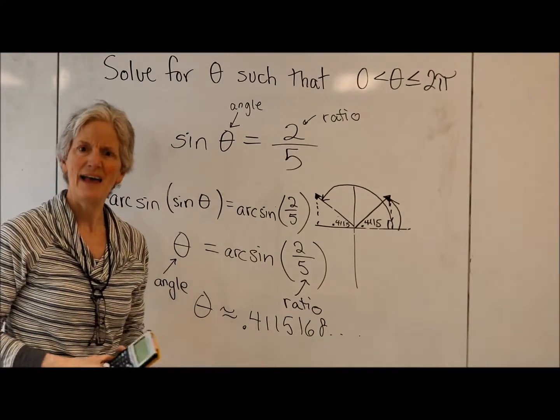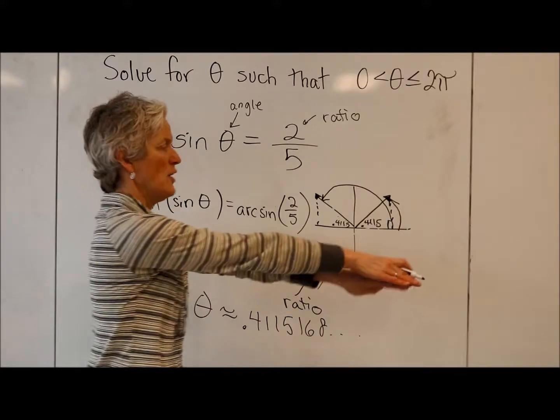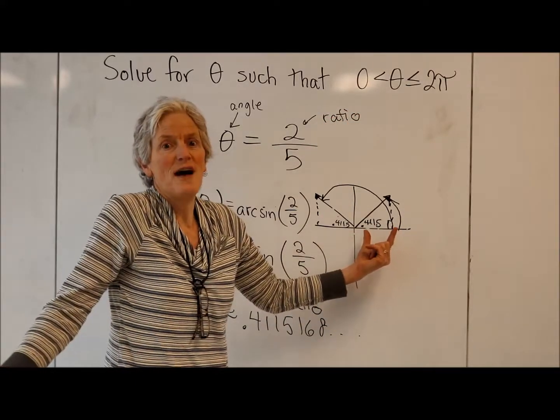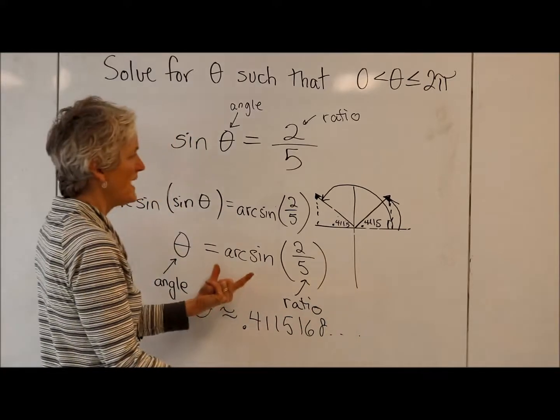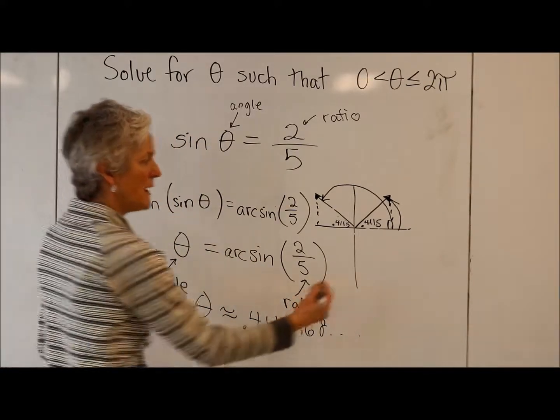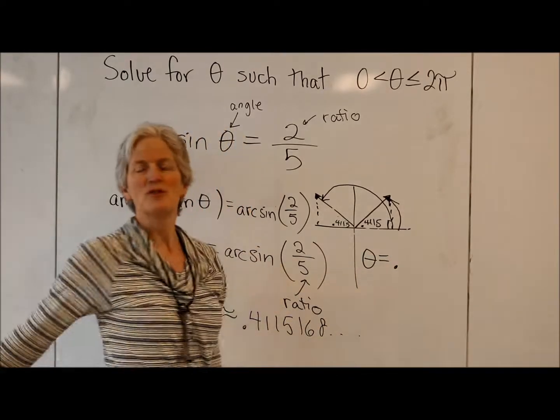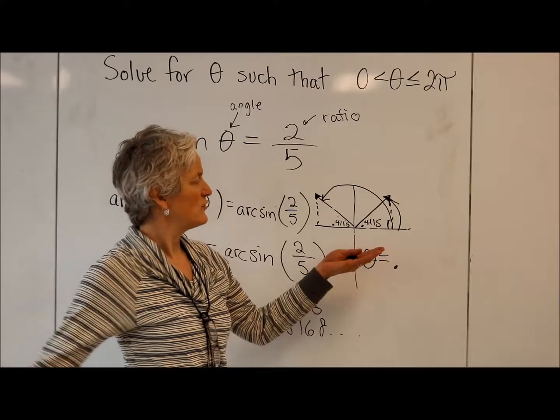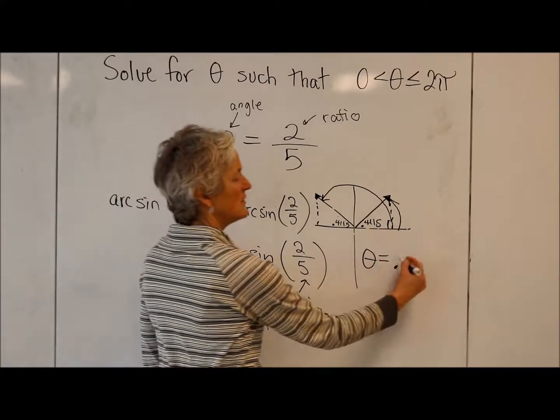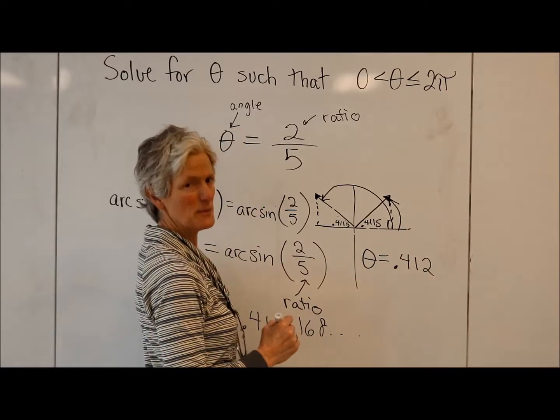And now I think I have enough information to find my two answers in this domain. So my first rotation is .4115 radians. That's one of my answers. Well, that wasn't too bad. I'm going to put my answer here. And you always have to be told what to round to in this situation. Let's round to the nearest thousandths, three places. So that's going to be .412 radians, approximately.